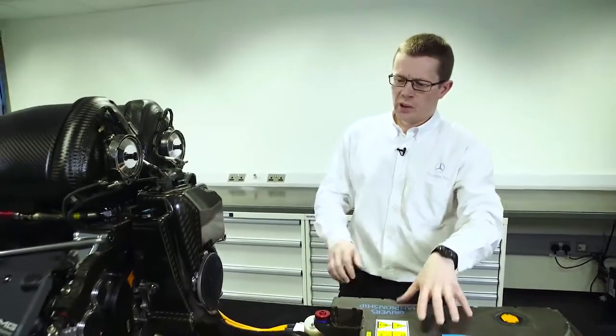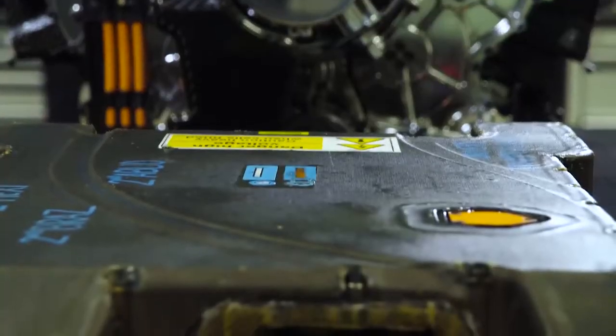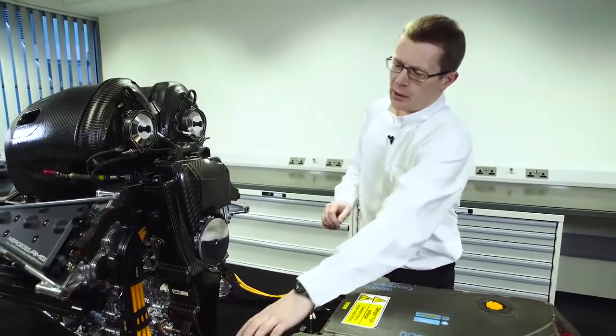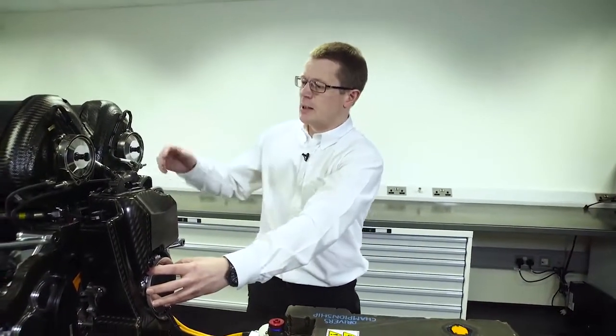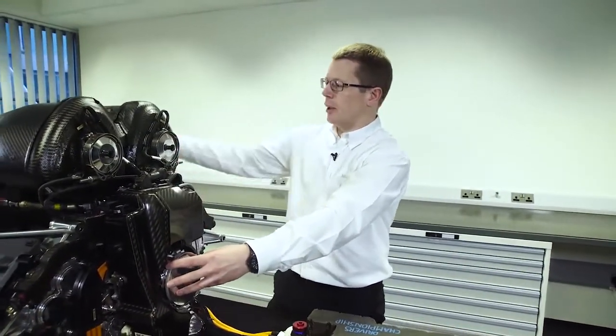The ERS system is made up of two electric motors and a battery. The first electric motor, the MGU-H, is connected to the back of the compressor and is mounted between the compressor and the turbine.